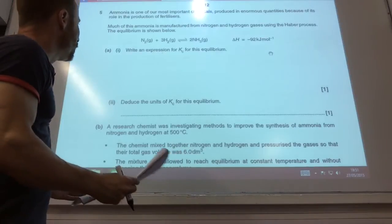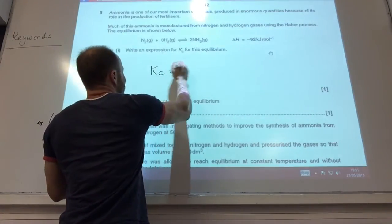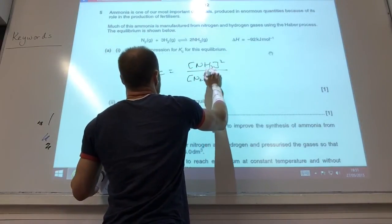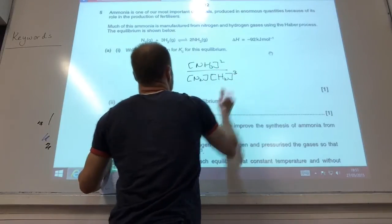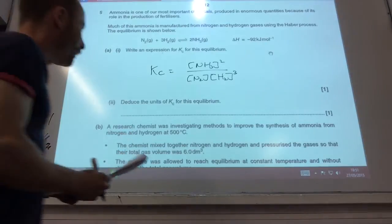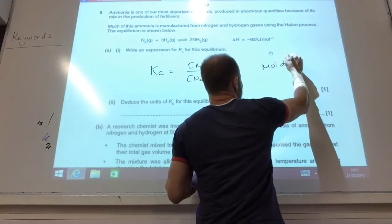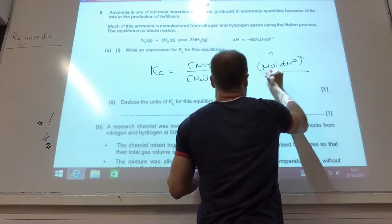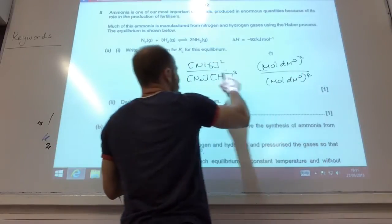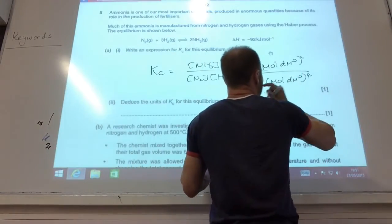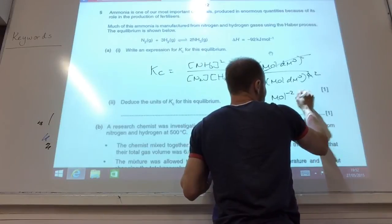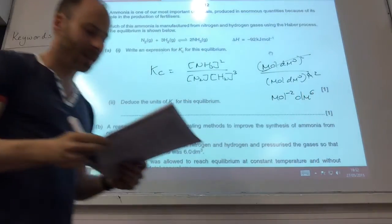First of all, a nice equilibrium one. We're going to run KC. You guys should be jumping with joy if this comes up. Nice and easy. One mark in the bag. What's going to be the units? Well, let's have a look. This is going to be moles per decimetre cubed squared. That is in moles per decimetre cubed to the power of 4, because that's the one that's doing. So it's going to be moles to the minus 2 decimetres to the 6.